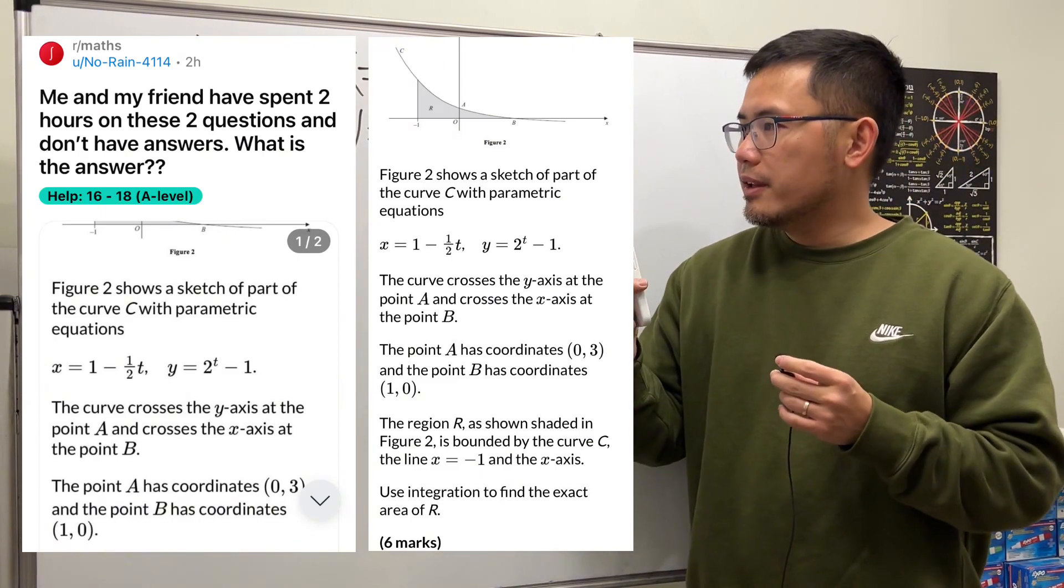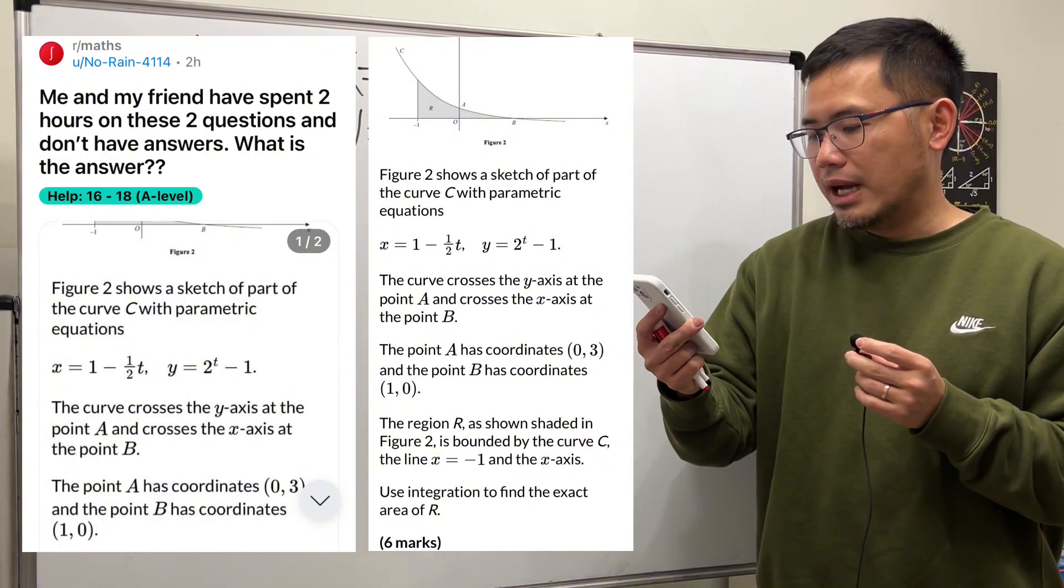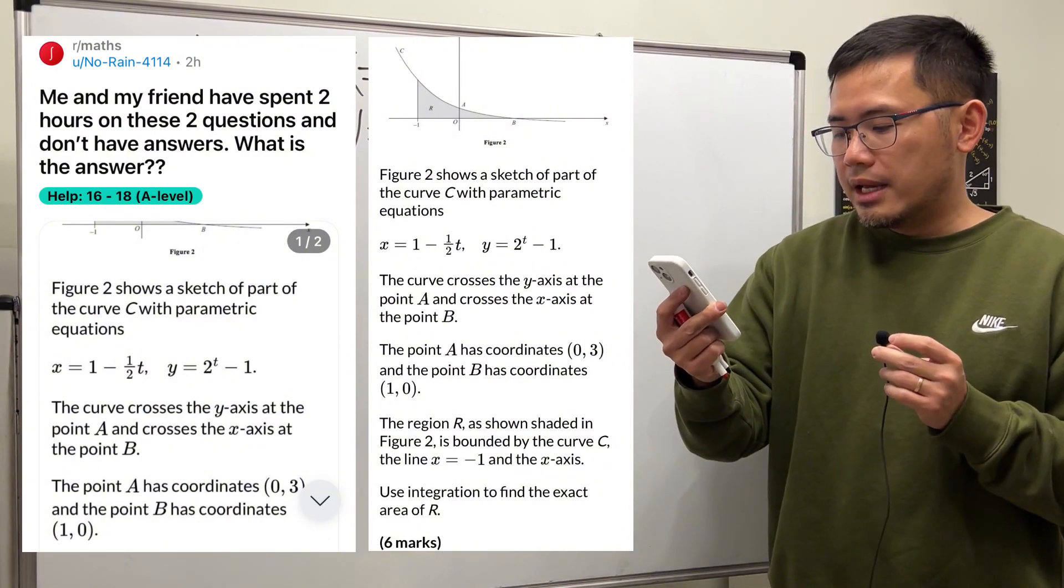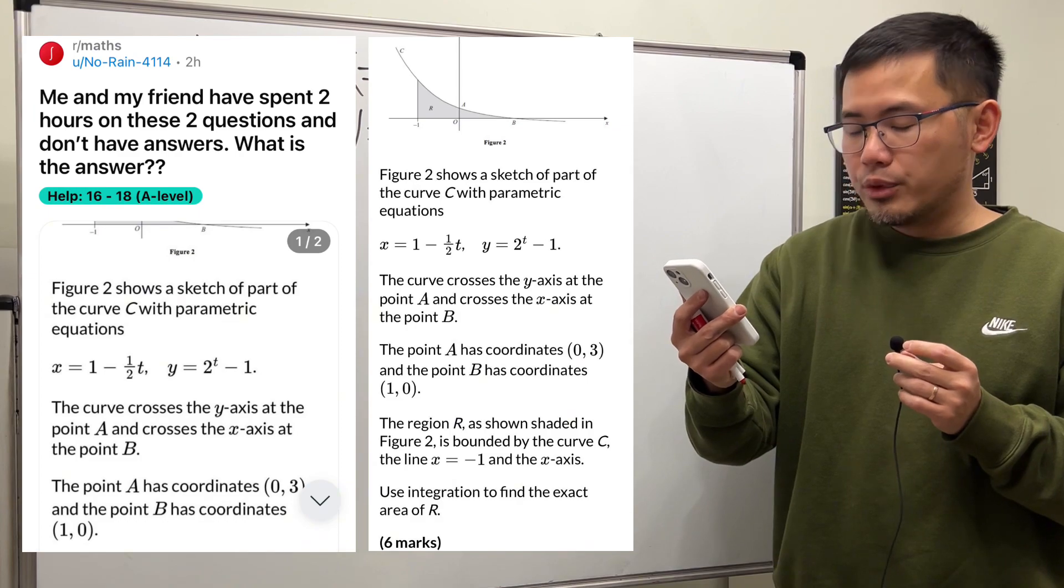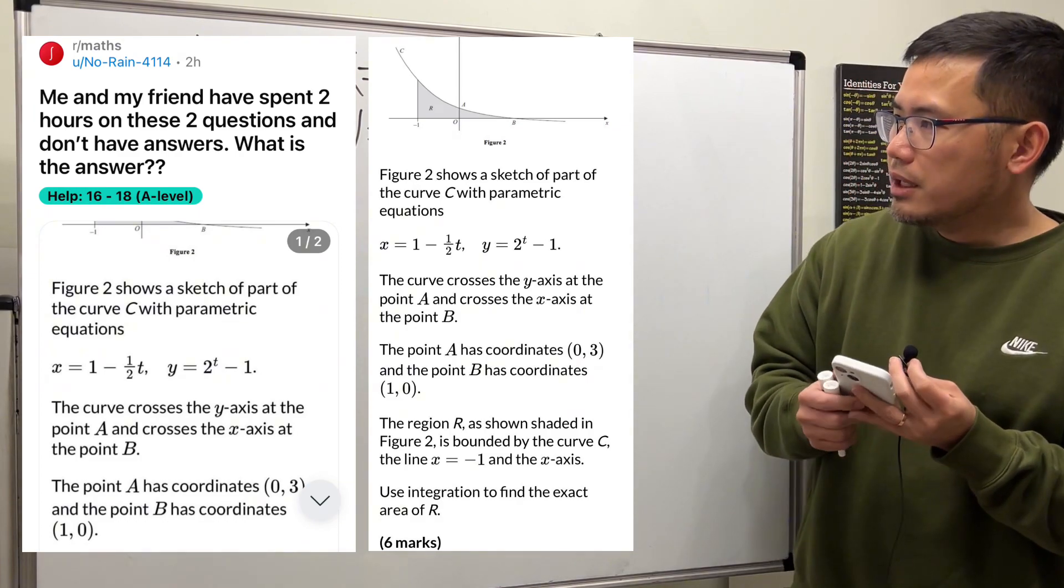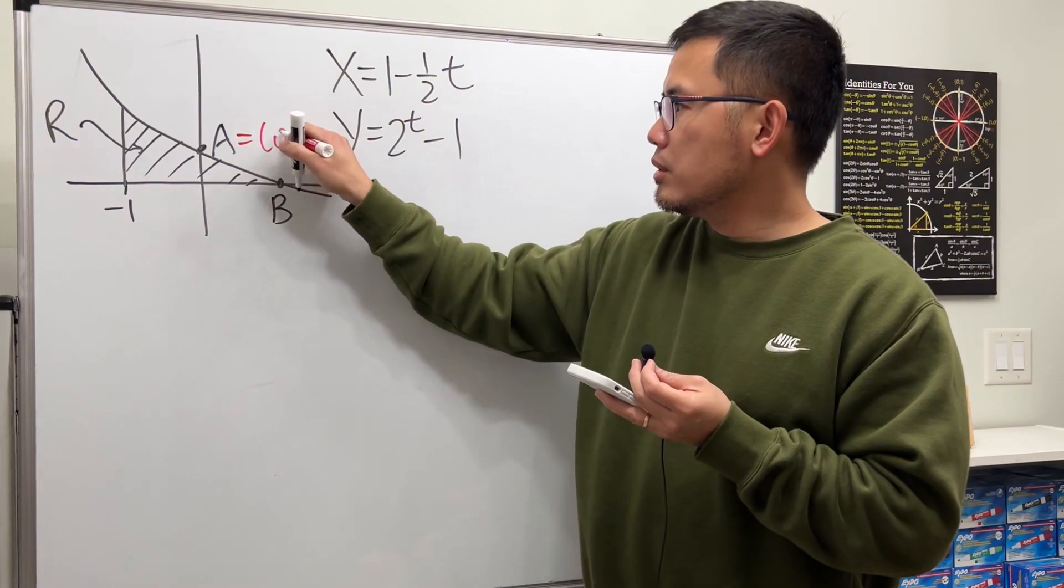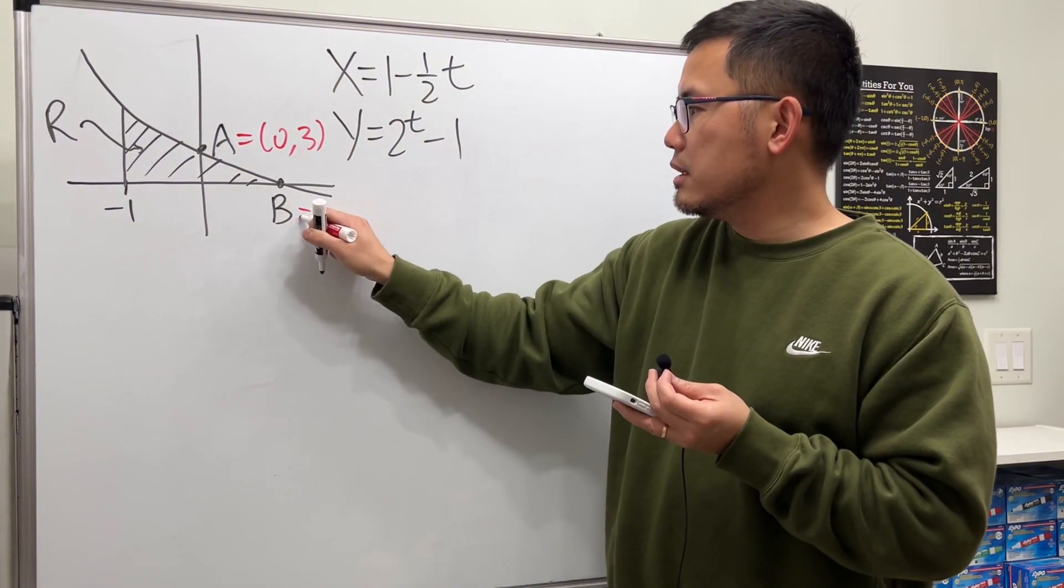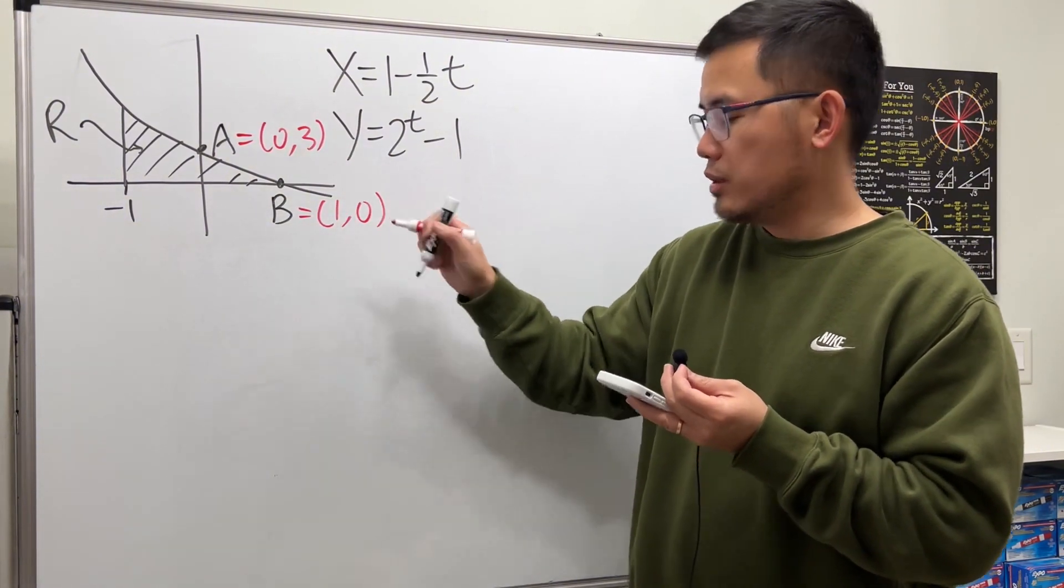Here we are given a region R, and we have parametric equations. Our goal is to find the exact area of R. And right here it says A is (0,3), and B is (1,0).